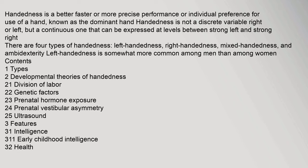Handedness is a better, faster, or more precise performance or individual preference for use of a hand, known as the dominant hand. Handedness is not a discrete variable — right or left — but a continuous one that can be expressed at levels between strong left and strong right. There are four types of handedness: left-handedness, right-handedness, mixed-handedness, and ambidexterity.